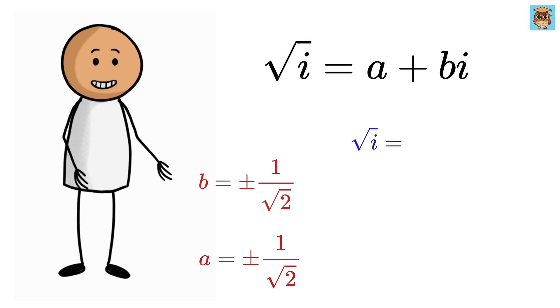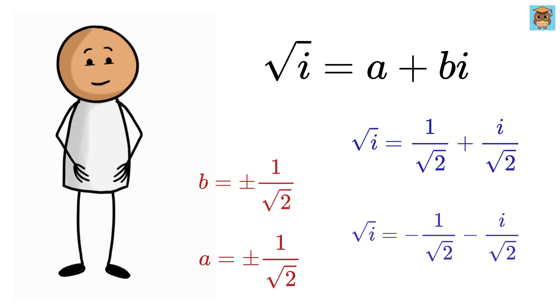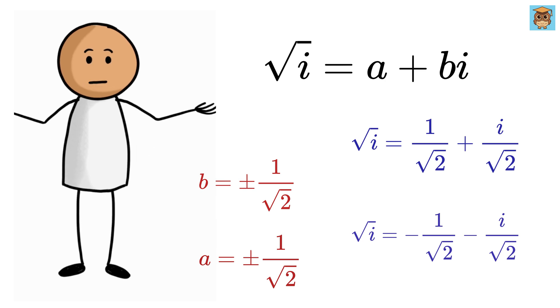Therefore, we have the square root of i either equals 1/√2 + i/√2 or -1/√2 - i/√2.